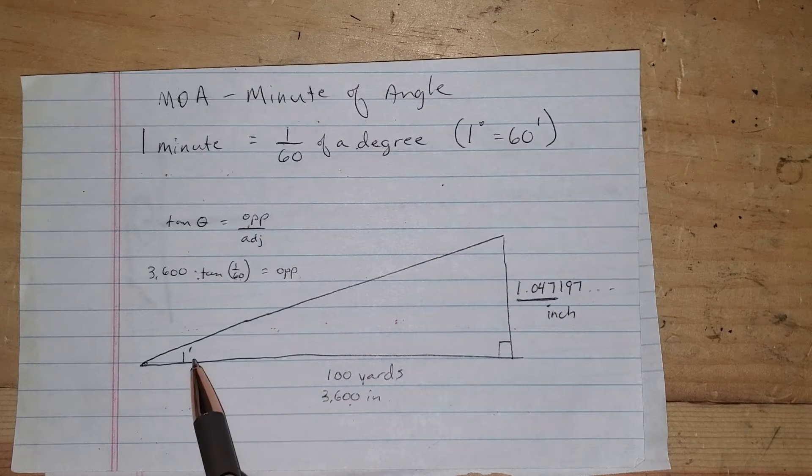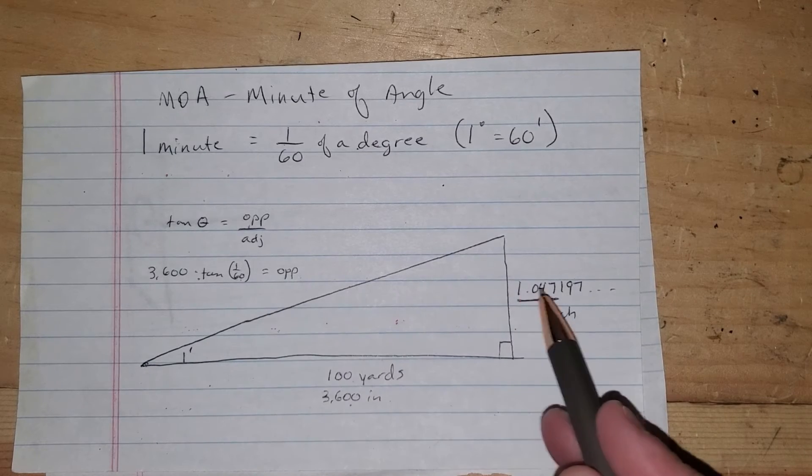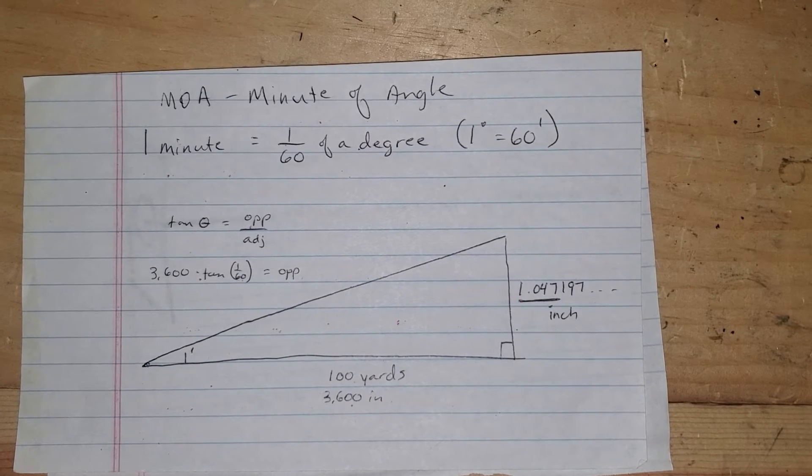So depending on what you're doing, that may matter. But basically, the way this works is at 100 yards, one MOA, 1.047 inches.